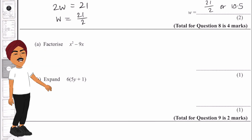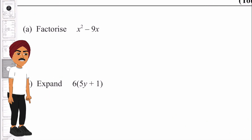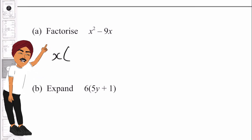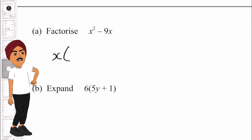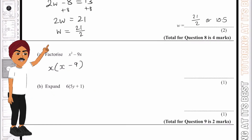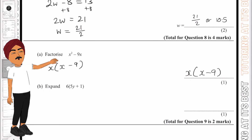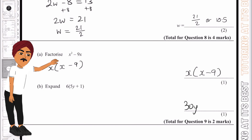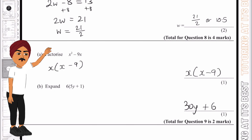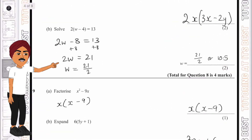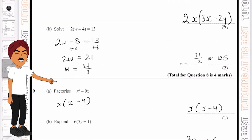For question 9a, we see two x terms in x² and 9x, so x is common. We put x outside the bracket, x inside the bracket, and minus 9, giving x(x − 9). For part b, multiply 6 by 5y to get 30y, and 6 by 1 to get 6, giving 6(5y + 1). I hope these questions were clear — feel free to pause the video and go back to review. Practice makes improvement, so keep up the great work.